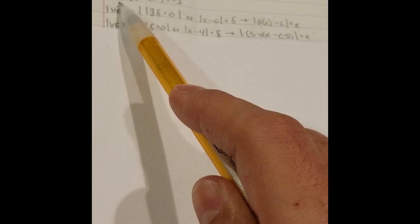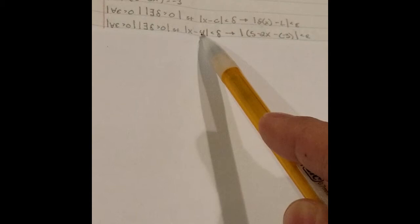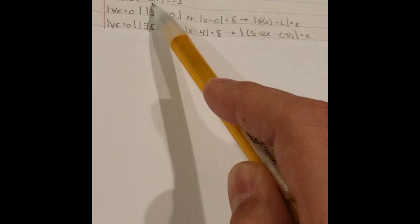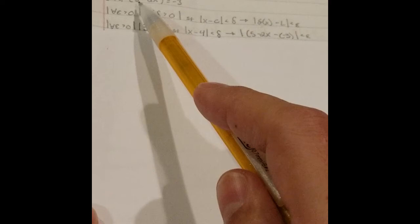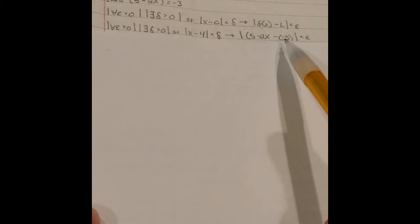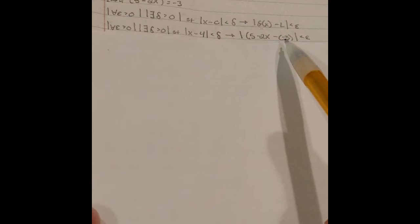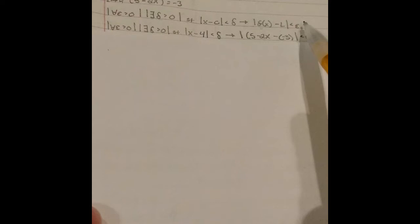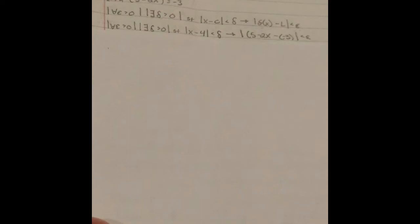So for x minus 4 less than delta, this implies our function f(x) — which is 5 minus 2x — minus L, where the limit is negative 3. So 5 minus 2x minus negative 3 is less than epsilon. Step 1: we stated the definition. Step 2: we plug in our actual terms based off of what we're given.